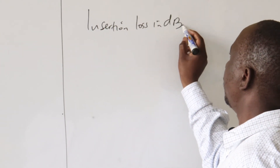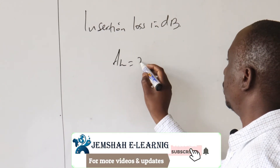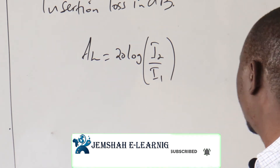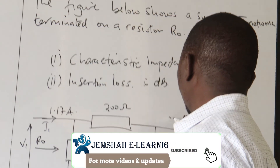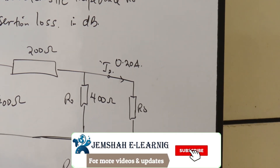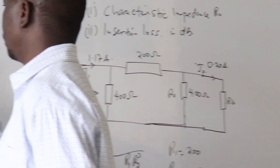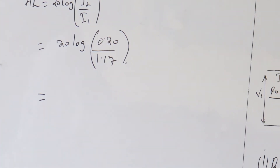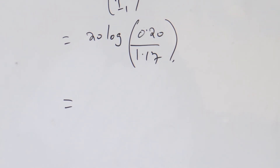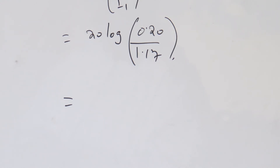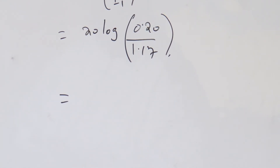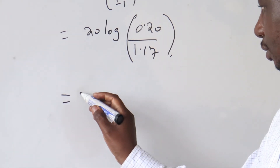The insertion loss in dB: AL equals 20 log of I2 over I1. From the diagram, I1 is at the input and I2 is at the output. The ratio is 0.20 over 1.17, giving a result of minus 57 dB.